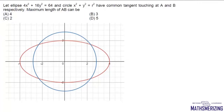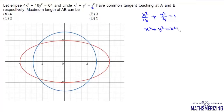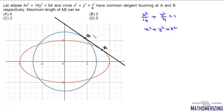We will discuss a very interesting problem in coordinate geometry. We are given an ellipse: 4x² + 16y² = 64, which we can write as x²/16 + y²/4 = 1, and a variable circle of radius r: x² + y² = r². The ellipse and circle have a common tangent touching the ellipse at point A and the circle at point B. We have to find the maximum possible length of AB. This is exciting because point A varies on the ellipse, point B varies on the circle, and the radius r itself can vary — so we are dealing with many variables.